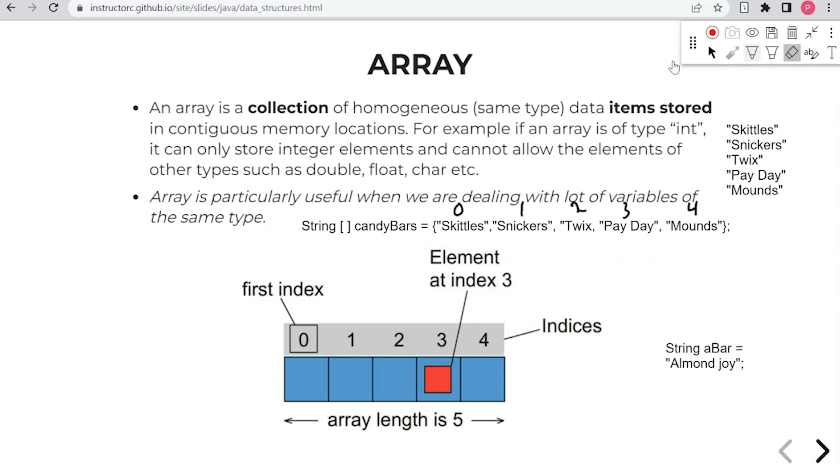And so if we were to draw this kind of how this would actually fit into this particular diagram, Skittles would go in this particular first index. Snickers would go here. Twix would go here. Payday would go here. And then Mounds would go here.